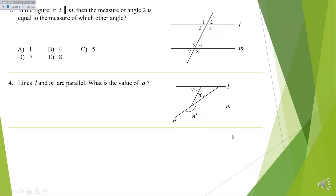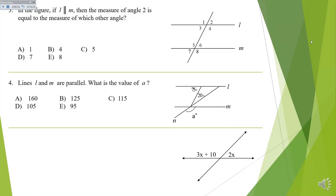Here's another one. Remember the straight line is your best friend because you always know how much it is — 180 degrees. This is just algebra: if all of these angles together equal 180 degrees, then how hard would it be to find X? You just set up your equation.